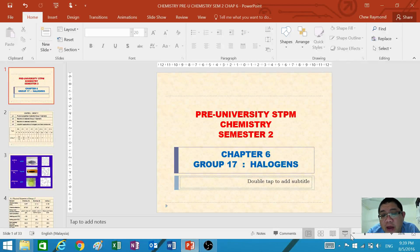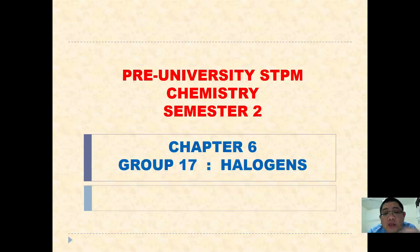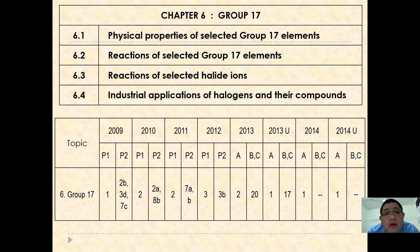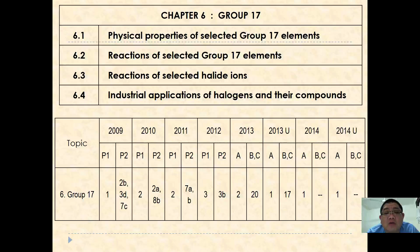Good evening, welcome back to my video presentations. We are going to continue with the sixth chapter of semester 2 STPM, where we're going to study group 17, also known as halogens. In this chapter we'll look at physical properties of selected group 17 elements, reactions of selected group 17 elements, reactions of selected halide ions, and industrial applications of halogens and their compounds. Let's start with the first subtopic: physical properties of selected group 17.